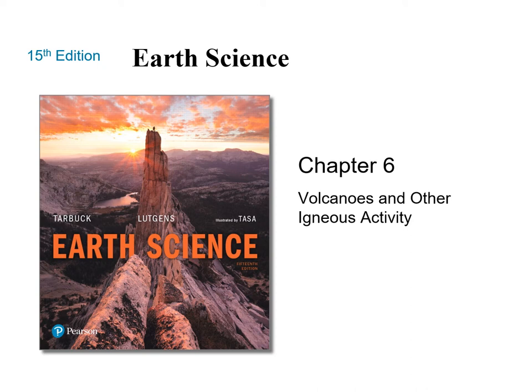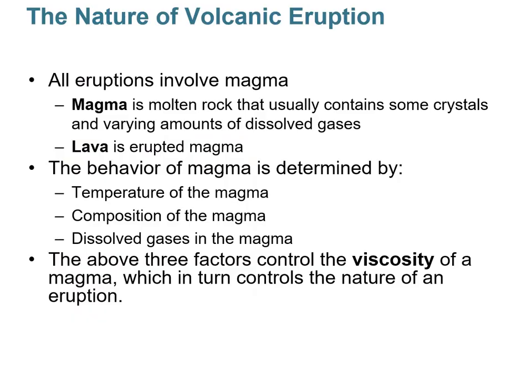Let's go over Chapter 6: Volcanoes and Other Igneous Activity. Volcanoes involve eruptions of magmatic material. Magma is molten rock — essentially liquid rock that contains minerals crystallizing out of it, dissolved gases within it. When magma reaches the surface it erupts as lava, so that's just the name change that occurs there.